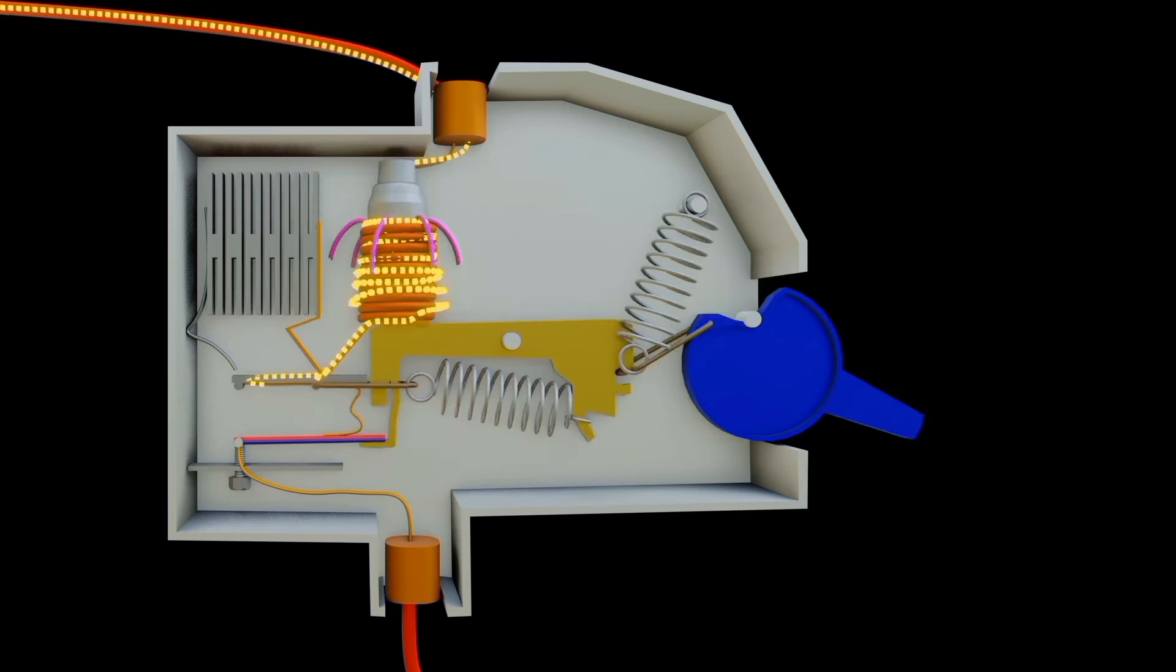When normal current rate flows through the coil a small amount of magnetic field is induced. This small magnetic field cannot pull the cylinder with the pin down due to the spring strength. But when the short circuit occurs, remember current doubles ten to one hundred times the normally operating rate.